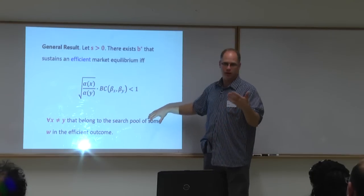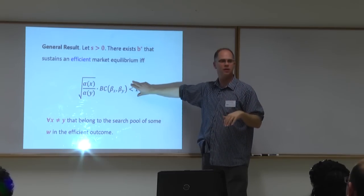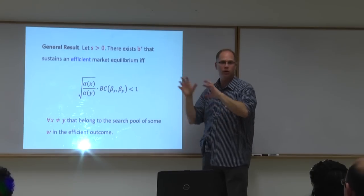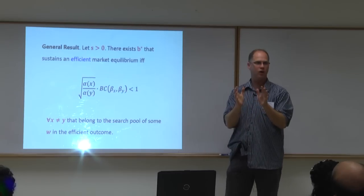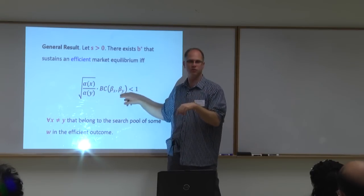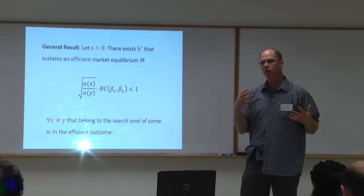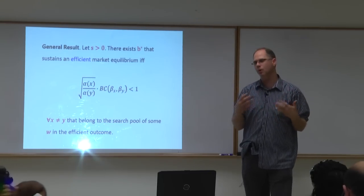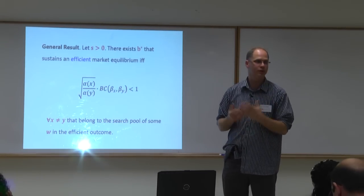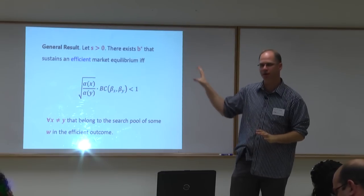There's another result about market prices: any B* satisfying the condition induces a market price formula related to the BC coefficient with nice comparative statics. For example, if consumers become more knowledgeable and better able to describe what they want, the price per click for all words will go up. That's the main result. Thank you.